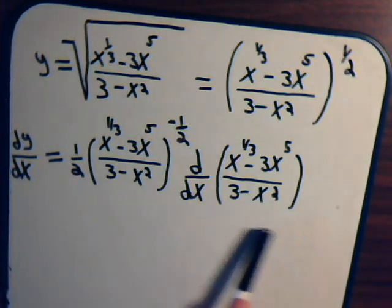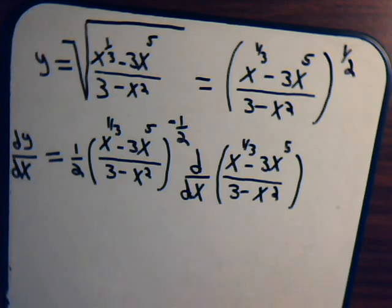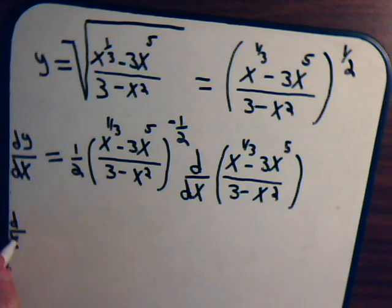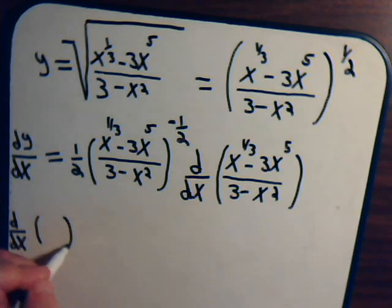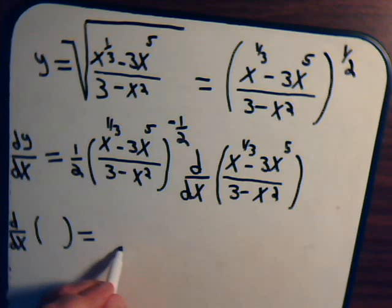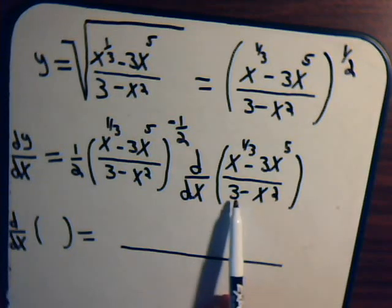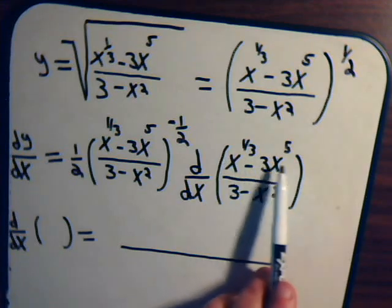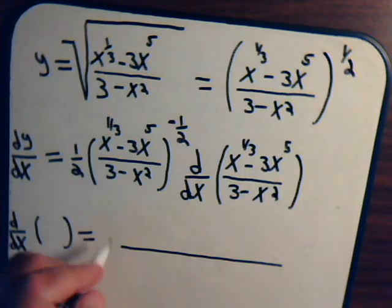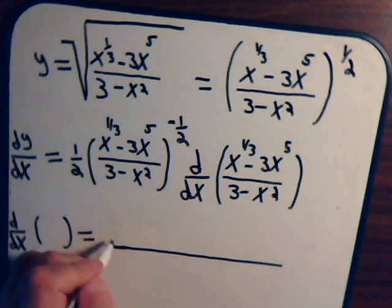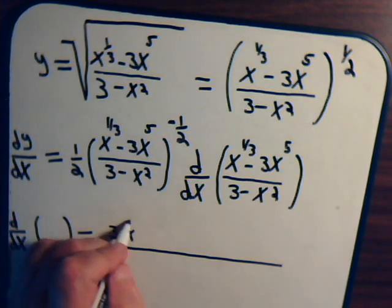Let's just work on this part of the problem. We have d/dx of the quantity inside of these brackets. Using the quotient rule, that will equal the denominator, 3 minus x squared, times the derivative of the numerator.